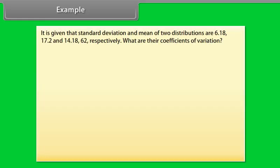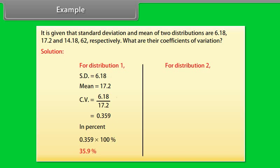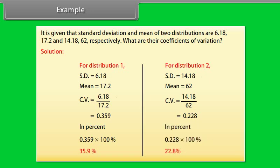Example: The standard deviation and mean of two distributions are 6.18, 17.2 and 14.18, 62 respectively. Find their coefficients of variation. For distribution 1: CV = (6.18 / 17.2) = 0.359, which is 35.9%. For distribution 2: CV = (14.18 / 62) = 0.228, which is 22.8%.